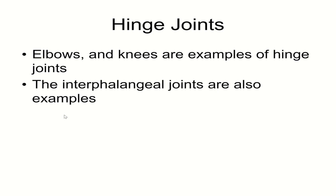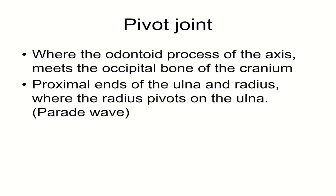Hinge joints are what we see with the elbows and the knees — it opens and closes like a hinge. This is also what our interphalangeal joints are, between the sections of the phalanges in both the fingers and the toes. Pivot joints are where we have an odontoid process that allows for the spinning of a joint to create rotational movement — this is also like how you produce a parade wave by rotating your radius around the ulna.